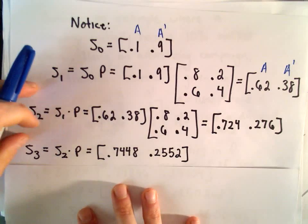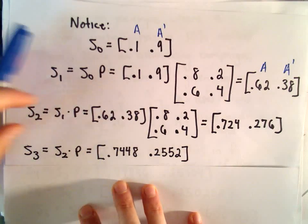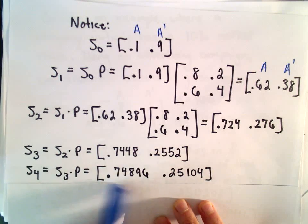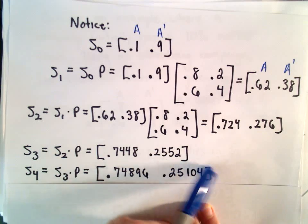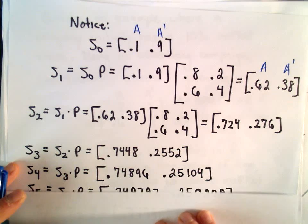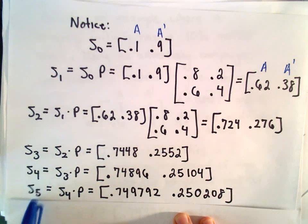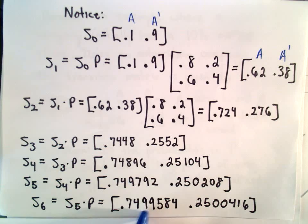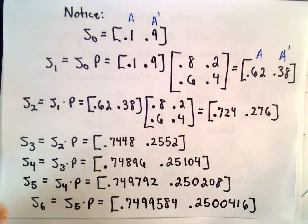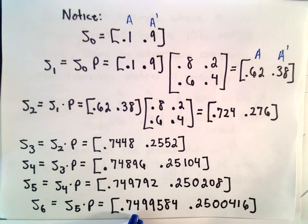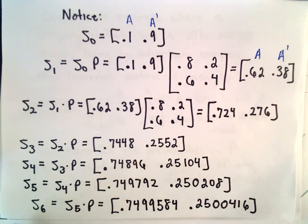Assuming this transition matrix stays valid, we could figure out what happens four months later. It looks like brand A is getting closer to 75%, and its competitors' market share is getting closer to 25%. After five months and six months, the values are getting really, really close. Brand A is getting really close to owning or controlling 75% of the market, and its competitors are getting closer and closer to 25%.